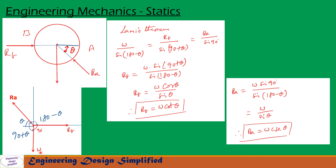Applying Lamy's theorem: W divided by sin(180 minus theta) equals Rb divided by sin(90 plus theta) equals Ra divided by sin 90. From the first and second terms, Rb equals W times sin(90 plus theta) divided by sin(180 minus theta). Since sin(90 plus theta) equals cos theta and sin(180 minus theta) equals sin theta, we get Rb equal to W cos theta divided by sin theta, which equals W cot theta. So the reaction of the vertical plane on the sphere, Rb, equals W cot theta.